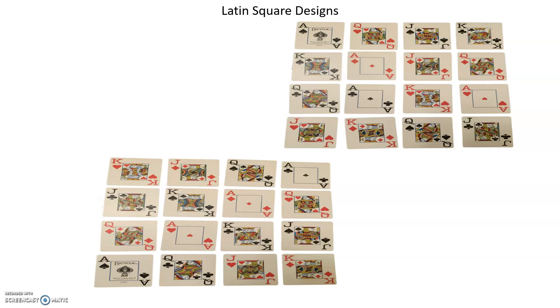So what are these limitations? You can only have a character or symbol appear once in each column and once per row. Unlike your classic game of Sudoku, it does not matter if the same character appears twice in a diagonal line.